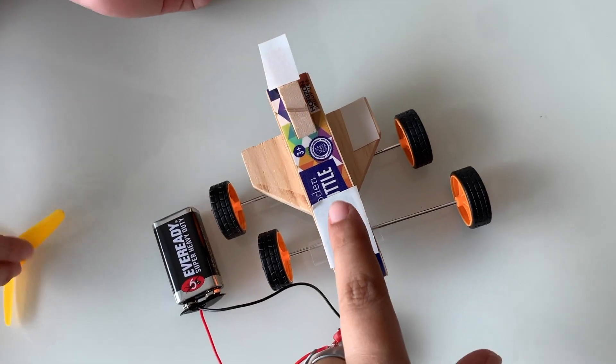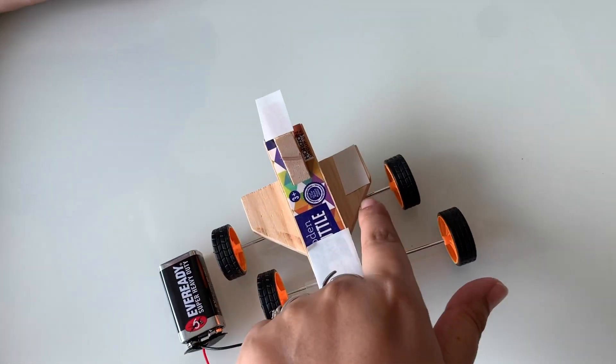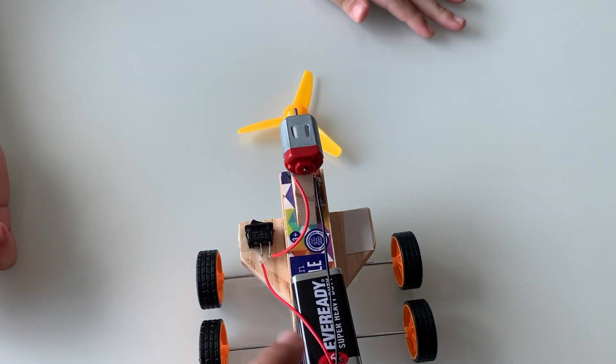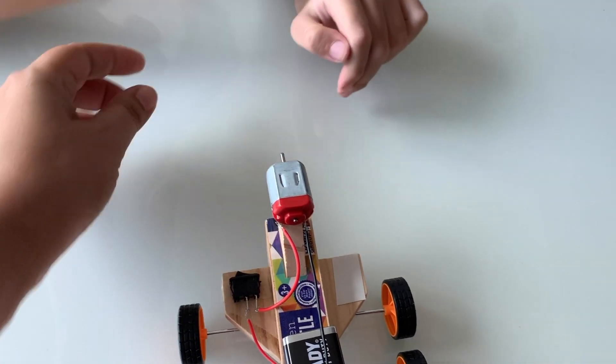We have added double sided tape for battery, motor and switch. So we have fixed the circuit. Now it's time to add the propeller.